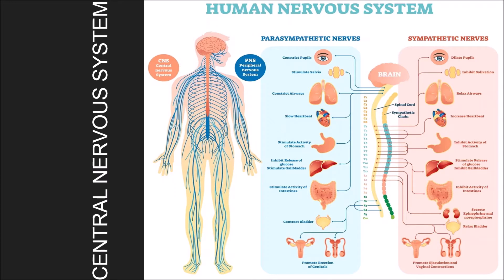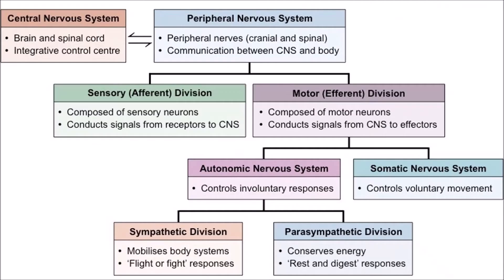The nervous system is responsible for our behaviors and thought processes. As you can see in the figure, the human nervous system has two major divisions, namely the central nervous system or CNS and the peripheral nervous system, i.e. PNS. The central nervous system comprises the brain and spinal cord that work together to make behavior possible.